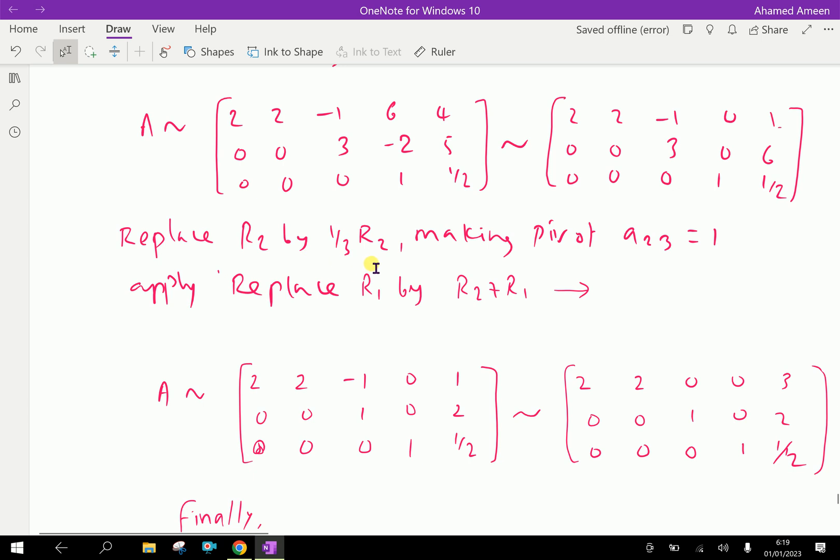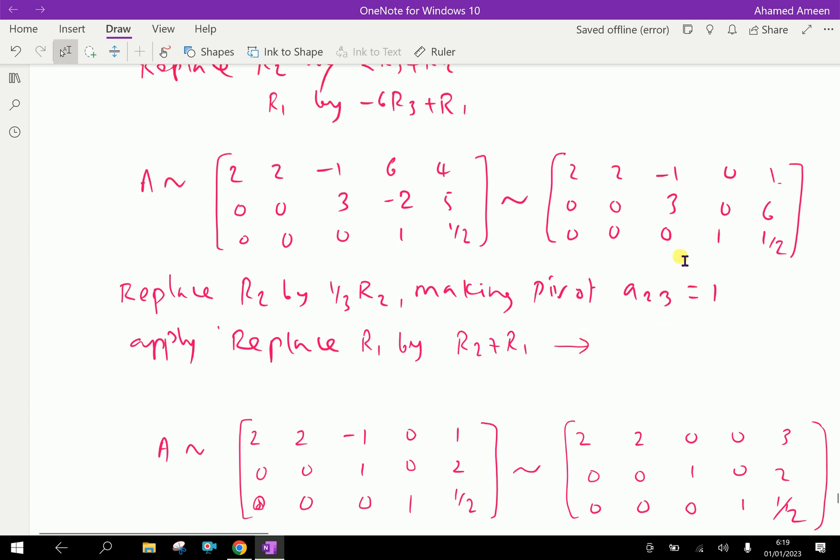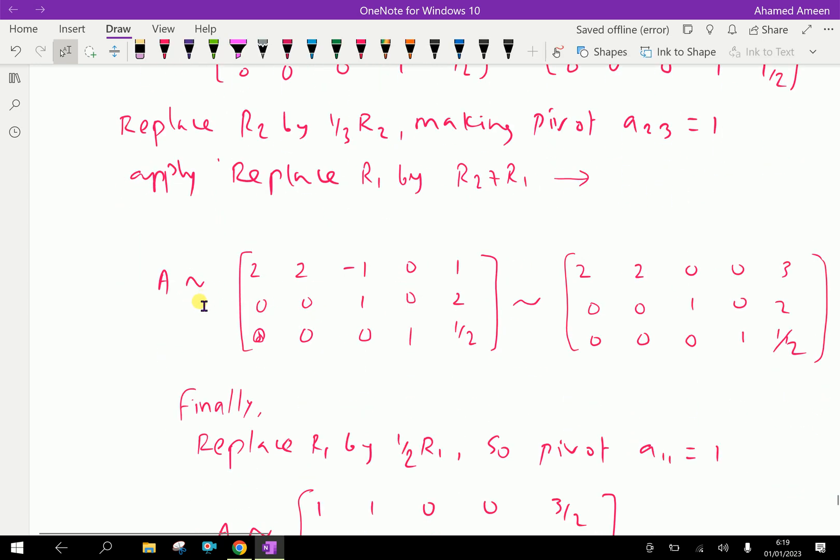Now replace R2 by 1 by 3 R2, making pivot a23 equal to 1. That gives 2, 2, minus 1, 0, 1, then 0, 0, 1, 0, 2, and 0, 0, 0, 1, half.